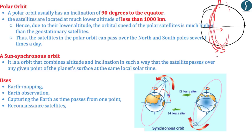Through multiple rounds, a satellite with a high-resolution camera can carry out effective mapping of the Earth. These kinds of satellites are extremely useful for Earth mapping, Earth observation, capturing the Earth over time, and reconnaissance satellites used for intelligence and military purposes.